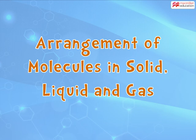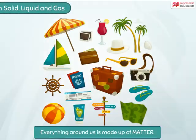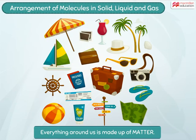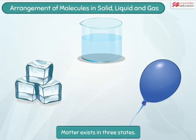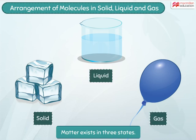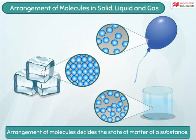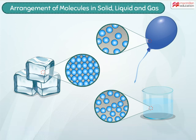Arrangement of molecules in solid, liquid, and gas. Everything around us is made up of matter. Matter can exist in three states: solid, liquid, and gas. The factor that decides whether the state of matter is going to be a solid, liquid, or gas is the arrangement of molecules in the substance. Let us learn more about the arrangement of molecules in the different states of matter.